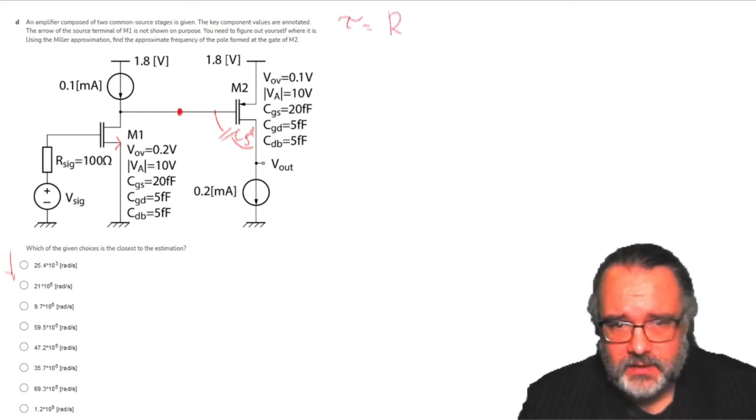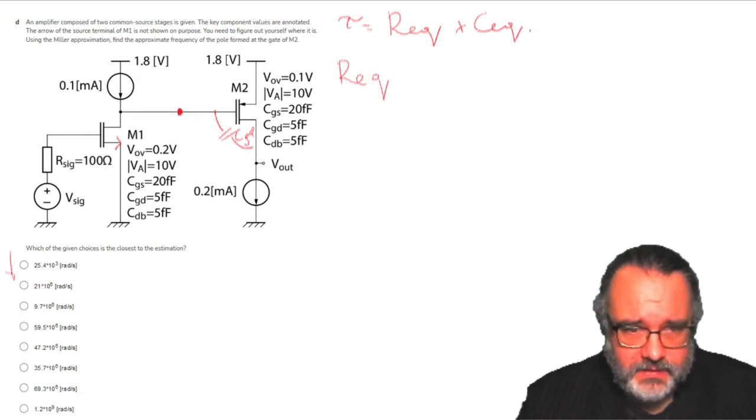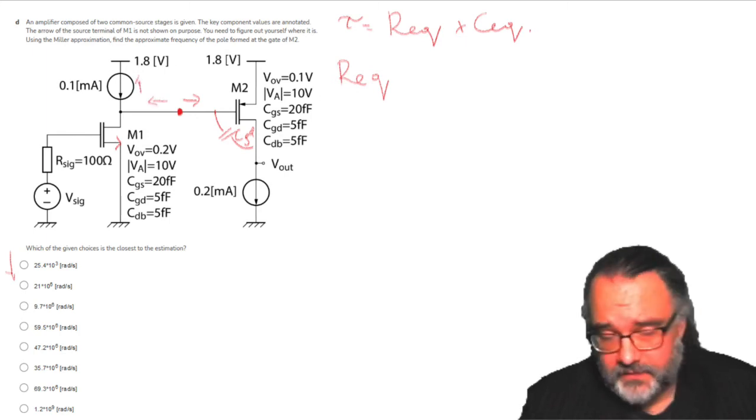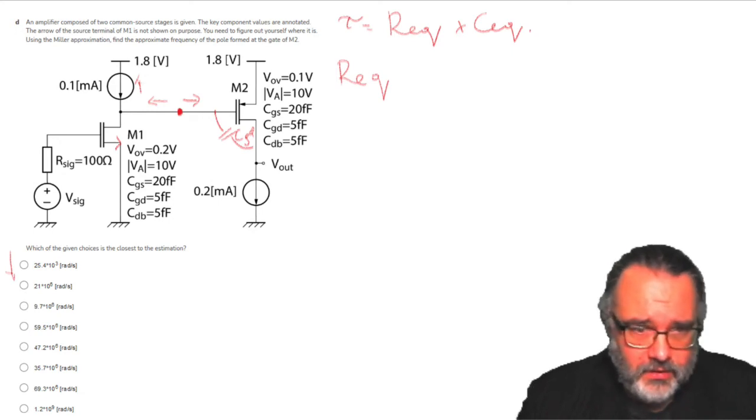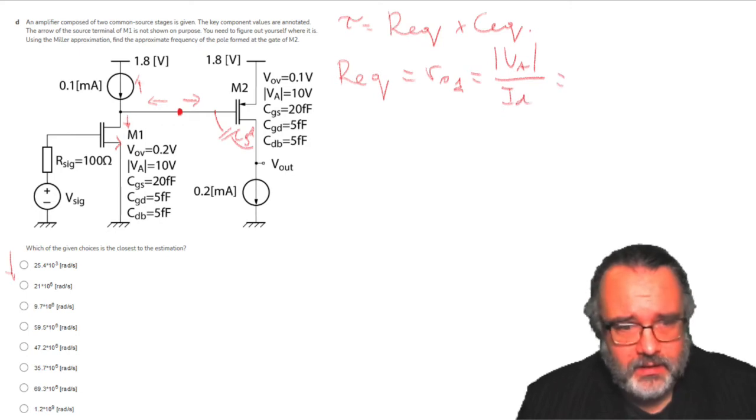The time constant associated with the gate of M2 is a certain equivalent resistance times certain equivalent capacitance. The easiest thing is to find the equivalent resistance. If we look at this side we see infinite resistance because this is the gate of M2. On this side we see infinite resistance because this is an ideal current source. So the only resistance that will determine the total resistance at this node is the drain resistance of transistor 1. This will be the early voltage divided by the current: 10 volts divided by 0.1 milliamps, which gives me 100 kilo ohms.